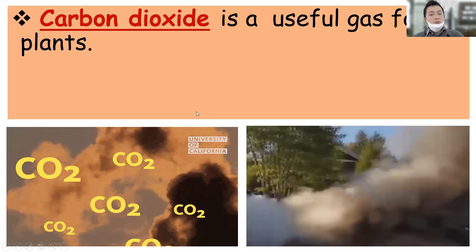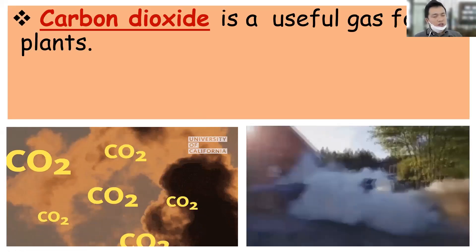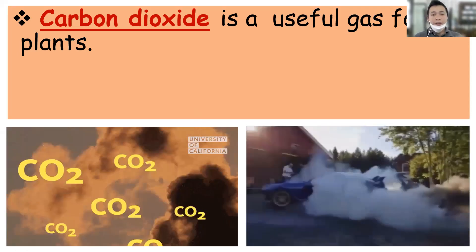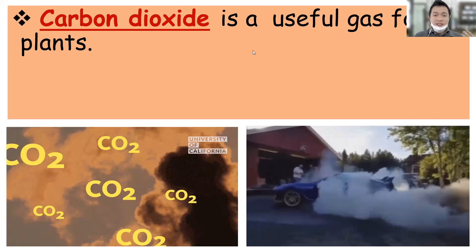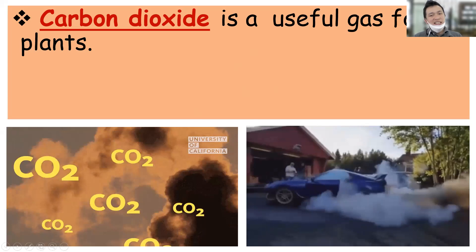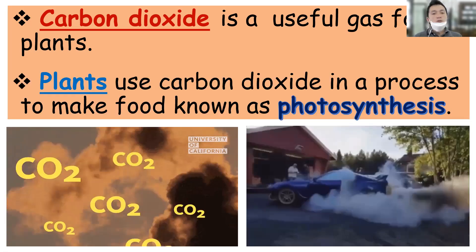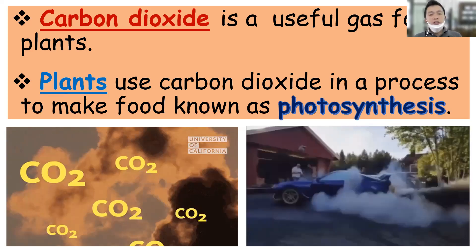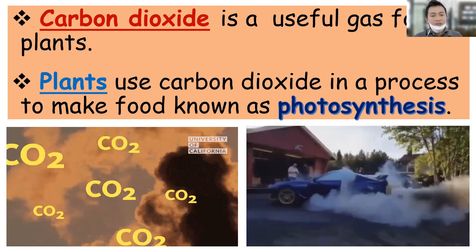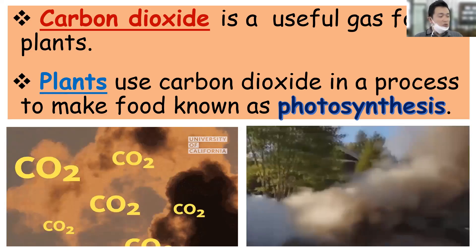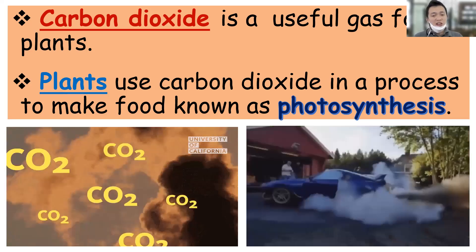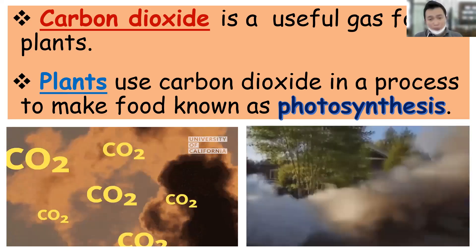Let's proceed to the next one. We already talked about oxygen, and now we are going to talk about carbon dioxide. What is the importance of carbon dioxide to us? Generally speaking, we don't need carbon dioxide in order for us to live, but the plants need carbon dioxide in order for them to survive and make their own food. Plants can make their own food in the process called photosynthesis. Carbon dioxide is present in the air — in this kind of smoke, for instance — and we don't need it, but the plants need it.